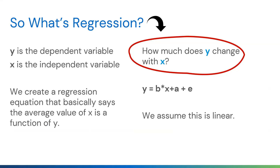In correlation, a is correlated with b and the direction doesn't matter. But in regression we ask: how much does y change with x? Y is the dependent variable — your outcome, like systolic blood pressure. X is the independent variable — in this case a medication — that is trying to change y. We create a regression equation that says the average value of y is a function of x.